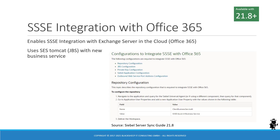Triple SE or SSSE is a product to integrate with Exchange Server and has been around for quite a while. With 21.8, it is now possible to integrate with Office 365. The Bookshelf Siebel Server Sync Guide 21.8 or higher has the details on this. Along with that comes a new business service, the SSSE Azure UI business service.